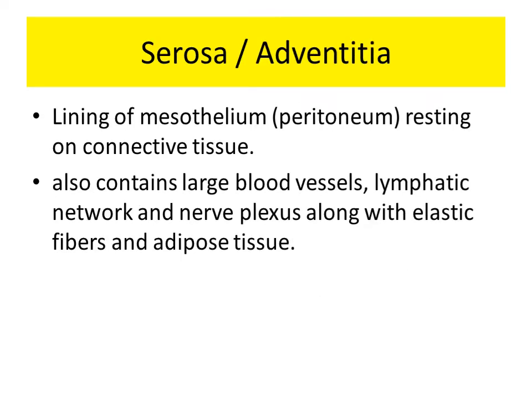The last layer is the serosa or adventitia. The portion of the gallbladder facing downwards is lined by peritoneum, that is the mesothelium, which is called the serosa. The remaining gallbladder, which is in naked contact with the liver, is not covered by peritoneum and is called adventitia. This layer contains large blood vessels, a lymphatic network, nerve plexus, along with elastic fibers and adipose tissue.